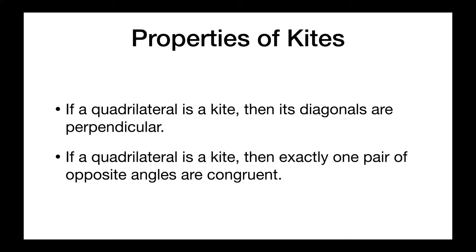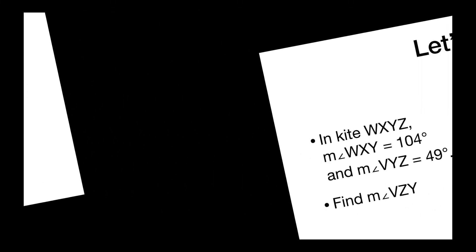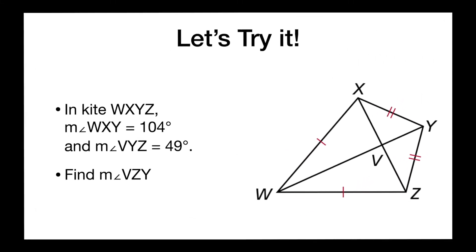The congruent angle pair is going to be across the normally shorter diagonal. The angles that are going to be congruent are where they are formed by the two non-congruent consecutive sides. So these two angles are going to be congruent, where this one is not congruent to the other.